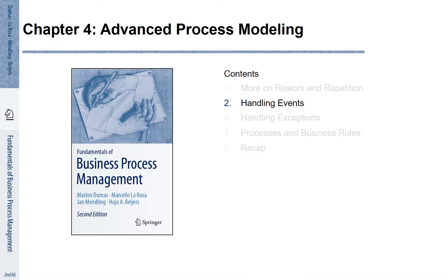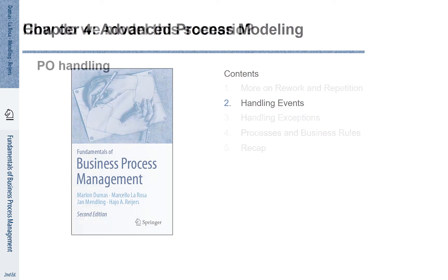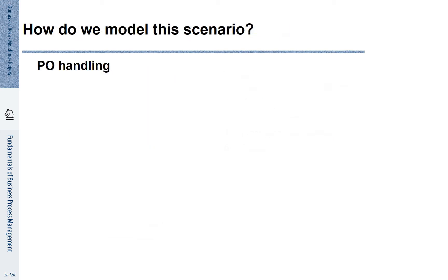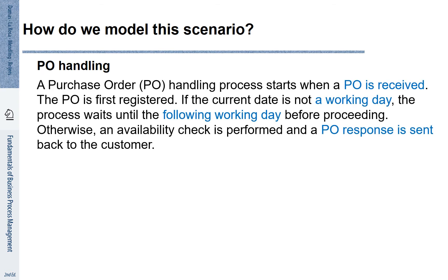Chapter 4, Section 2: Handling Events. Events are very important for business processes. Let's look at the following description of a purchase order. A purchase order handling process starts when a purchase order is received.